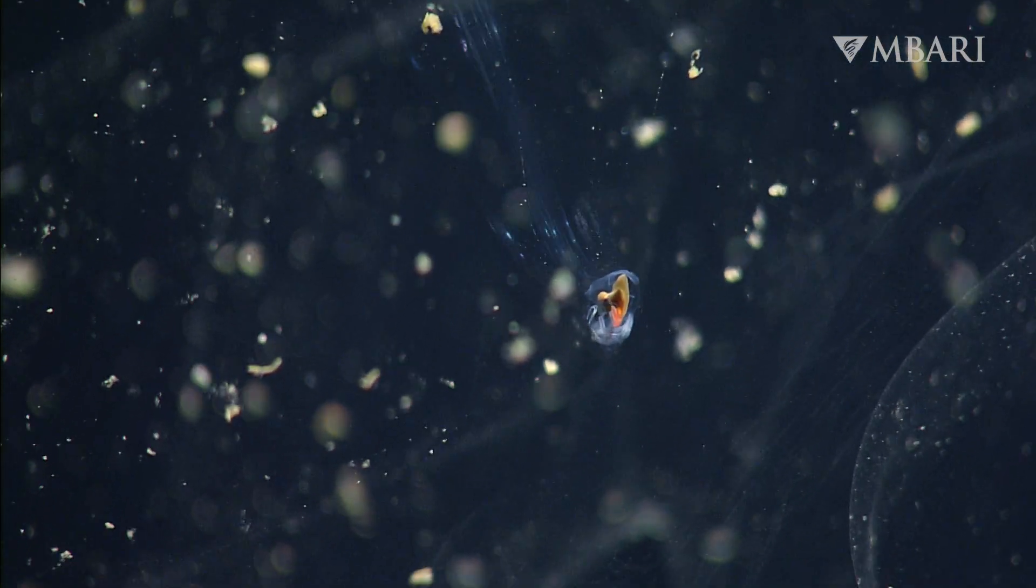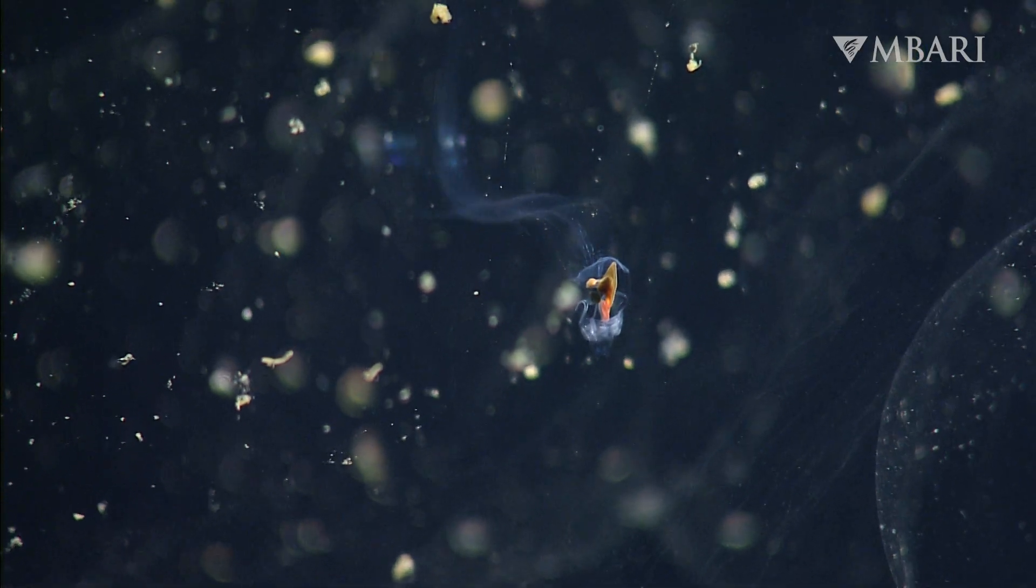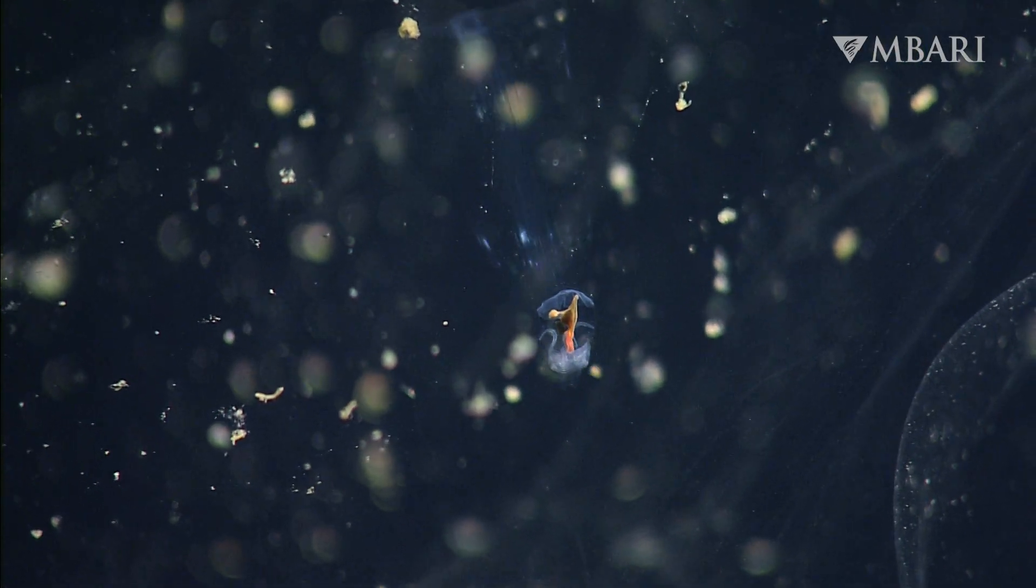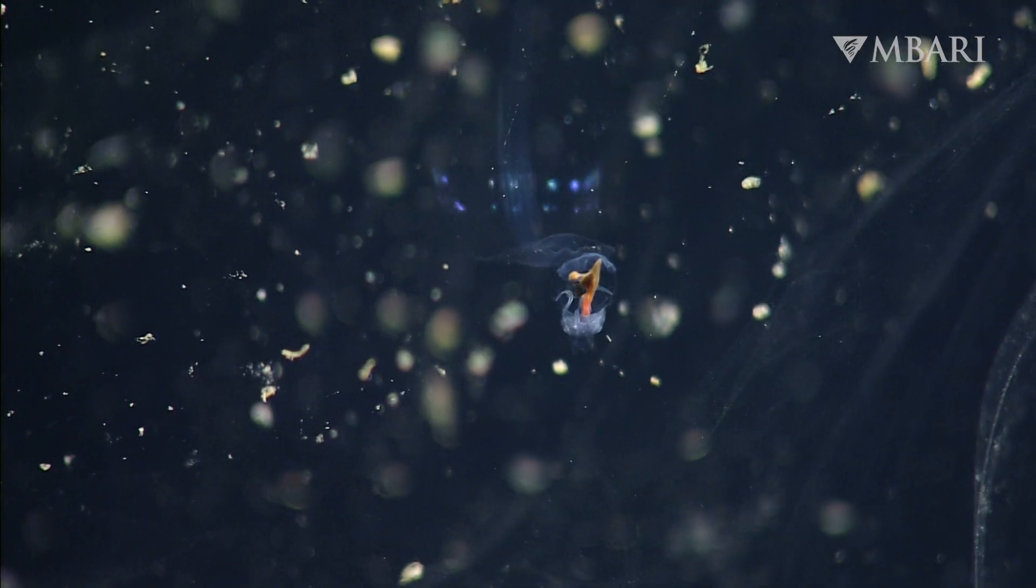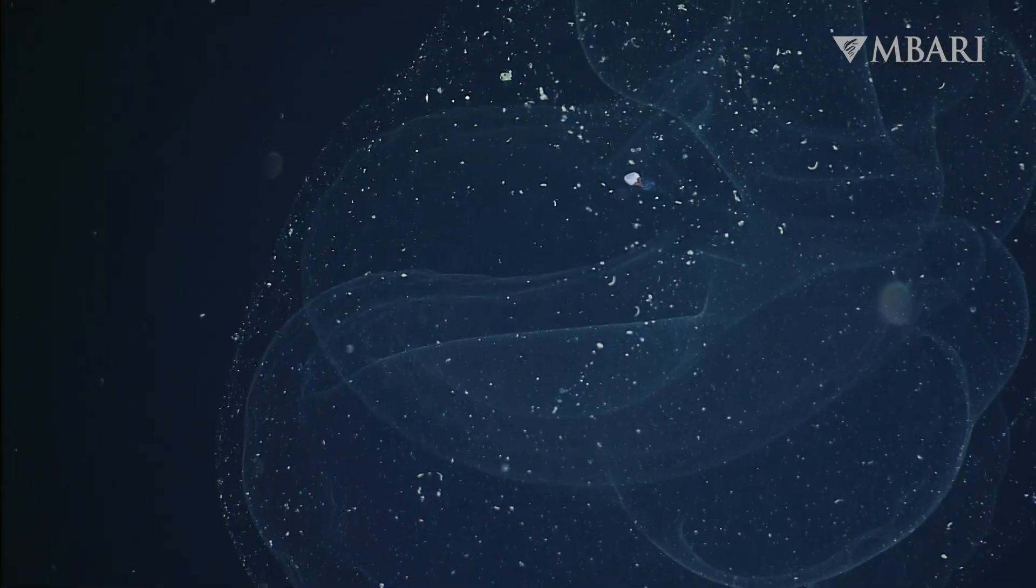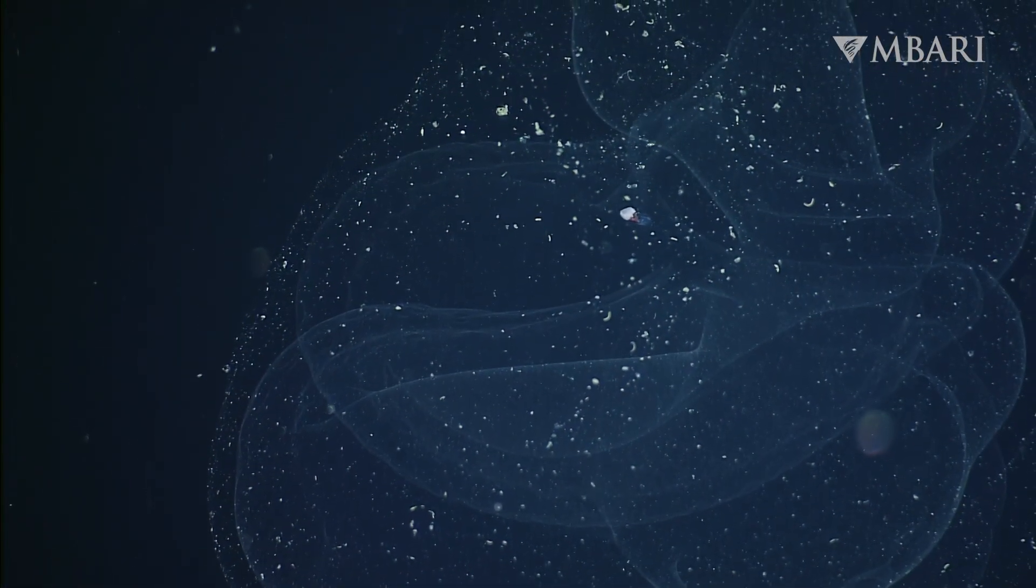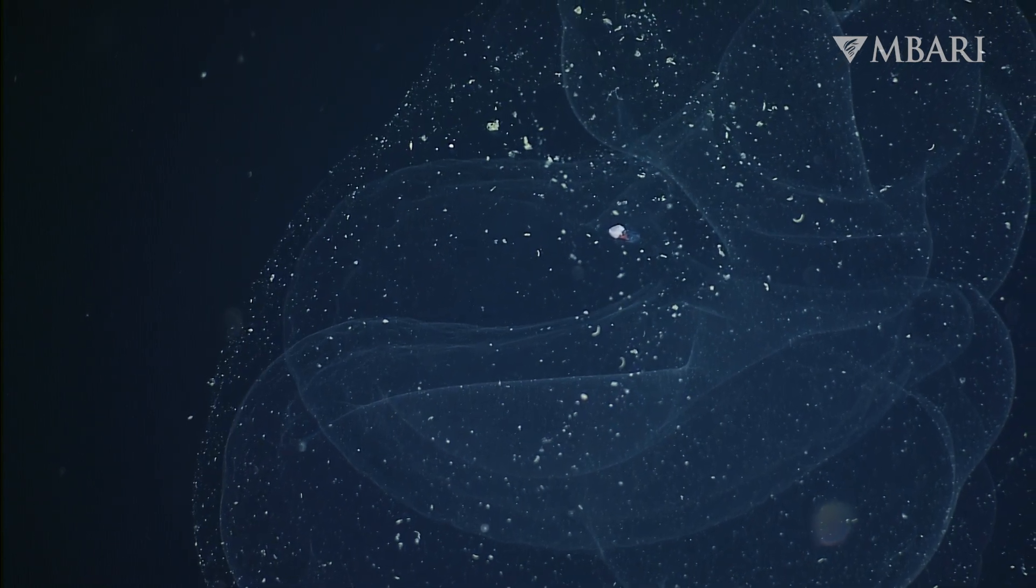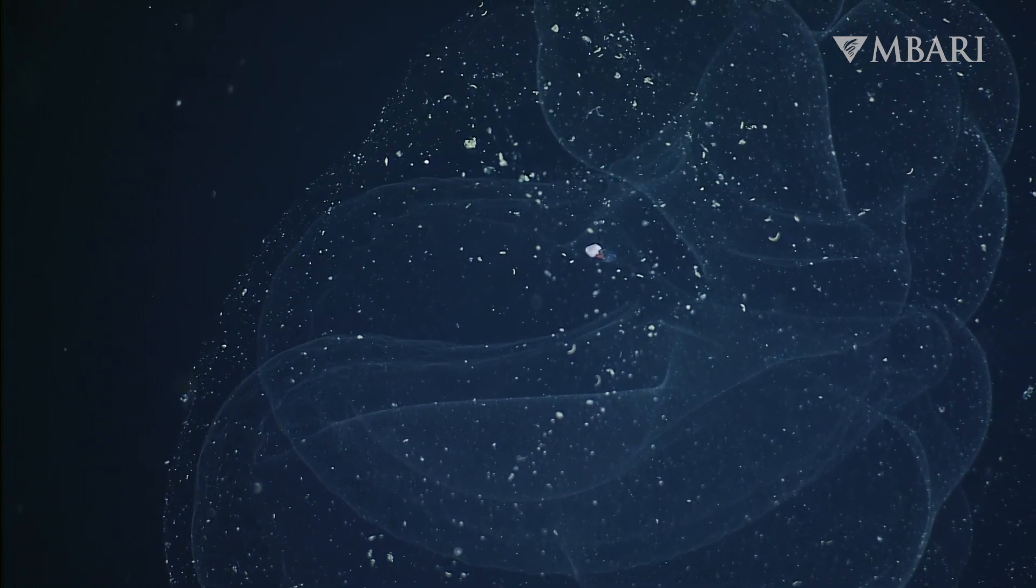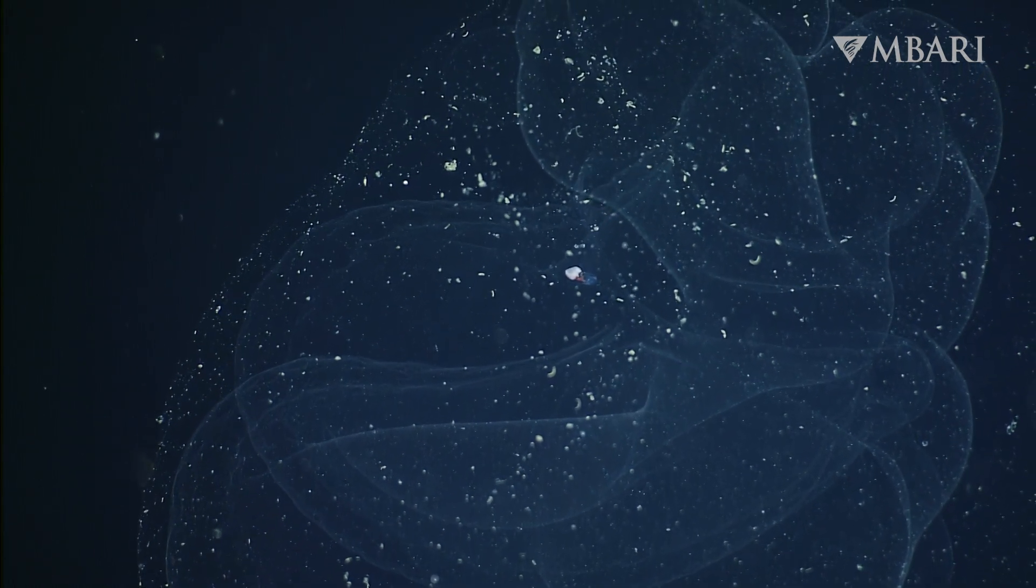Larvaceans are small, tadpole-shaped animals who construct complex mucus houses to help them capture food. These structures function by filtering marine snow, drifting bits of dead plankton, poop, and other organic material into the larvacean's mouth.